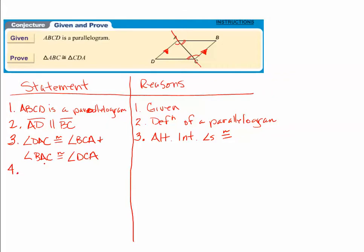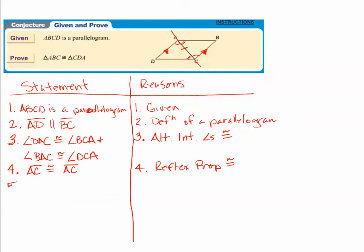We've proved those angles are congruent. Another thing noted when marking the figure is that AC is congruent to AC. Sometimes you just have to state what you know without an if-then. The reason for that is the reflexive property of congruence.